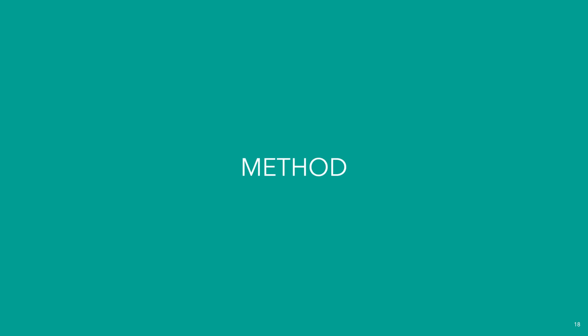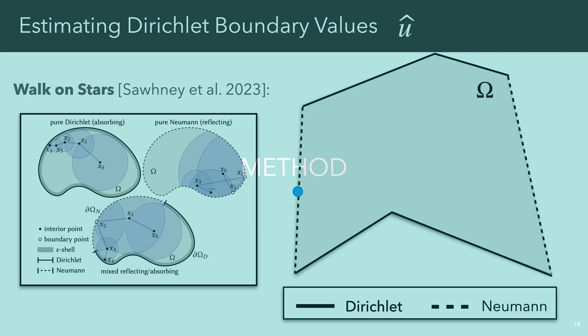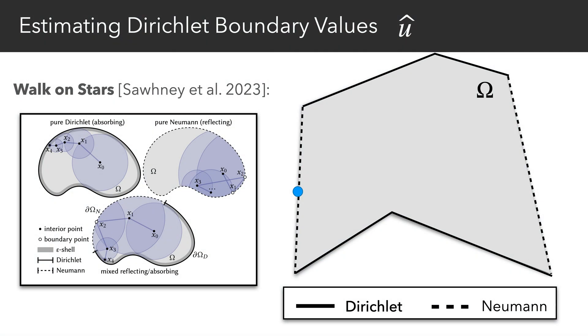So how exactly do we go about estimating the boundary values? There are many point-wise estimators, such as walk-on-stars and walk-on-boundary, and each of these can be used to estimate the boundary values. Our method happens to use walk-on-stars, since it's unbiased, has bounded variance, and can efficiently handle mixed boundary problems.